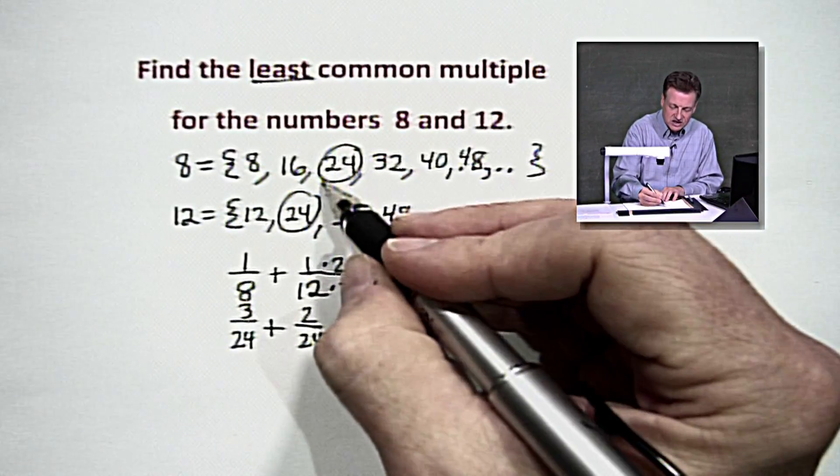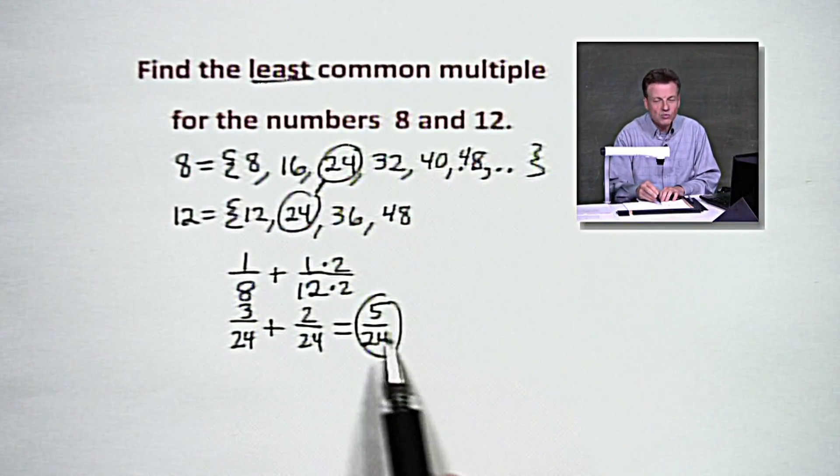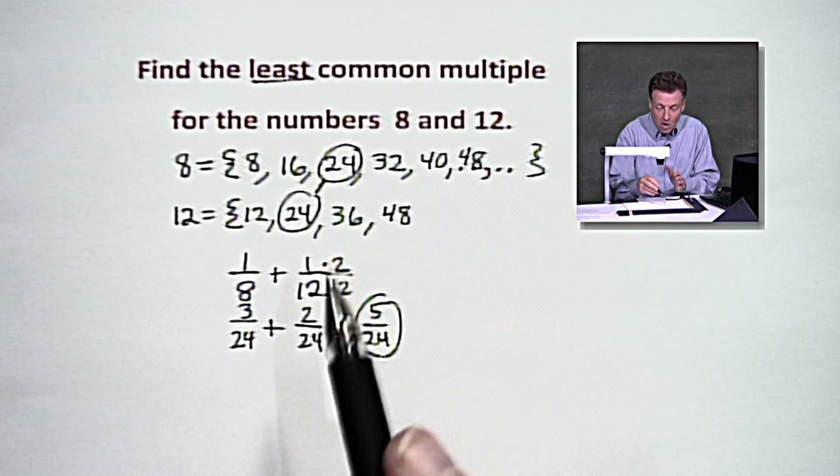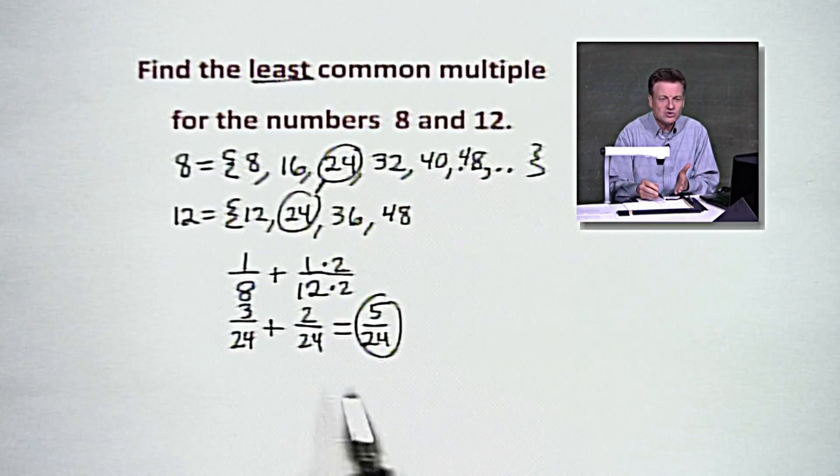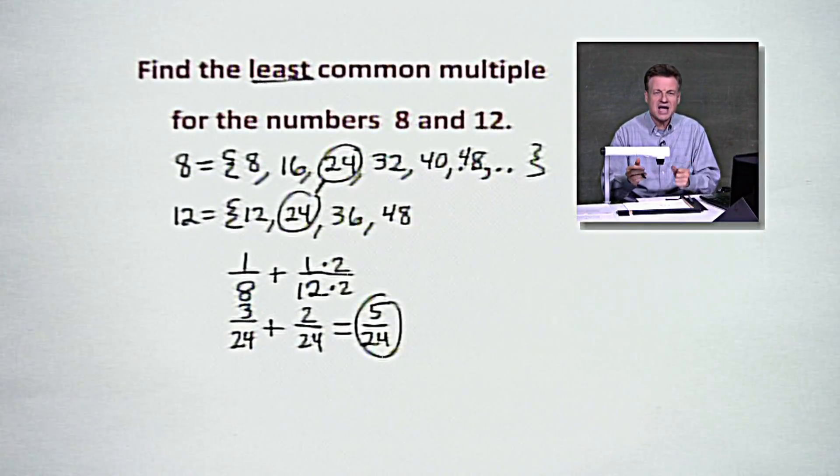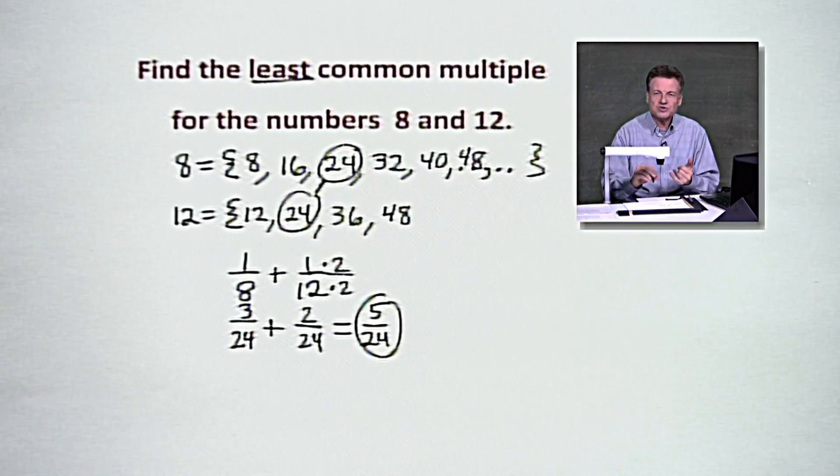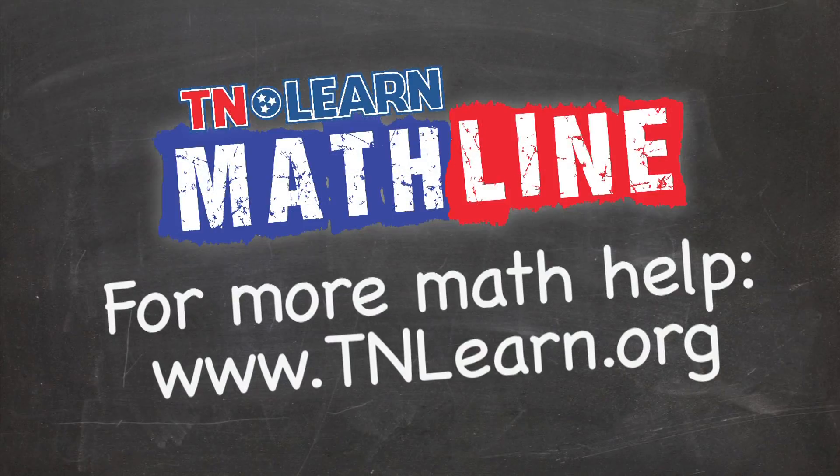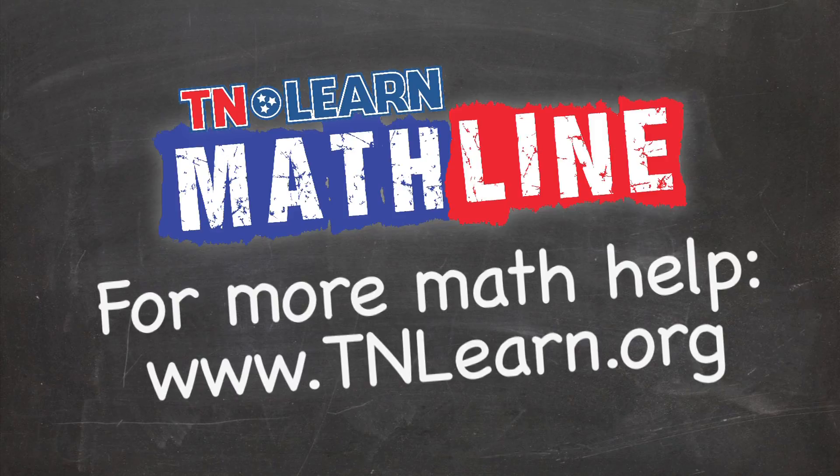What's the answer to the question? The question is 24, but I want to give you a little example of where is this concept used. When we add fractions, it's what we do every time, or subtract fractions. Least common multiples are the same thing as a least common denominator. All right. For more math help, visit tnlearn.org.